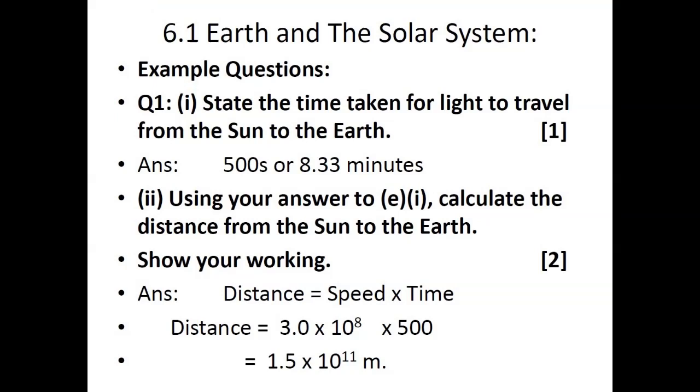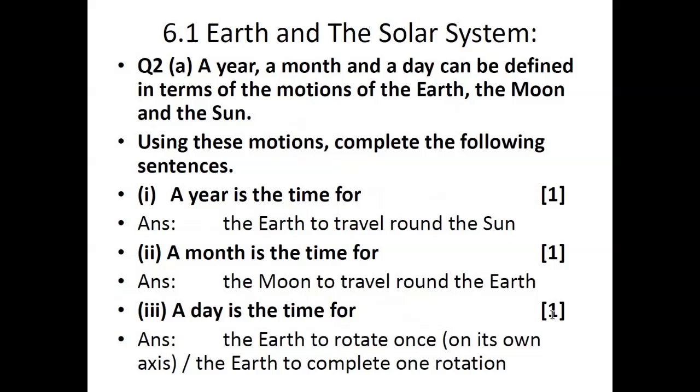Example questions: State the time taken for light to travel from sun to Earth. The answer is 500 seconds, or 8.3 minutes. Using this answer, calculate the distance from sun to Earth. Put it in the formula: distance equals speed times time. The speed of light is 3.0 × 10⁸ meters per second. Multiply this with 500 seconds and you get 1.5 × 10¹¹ meters.